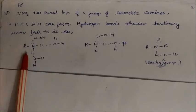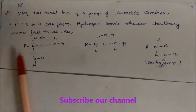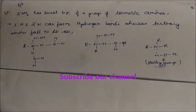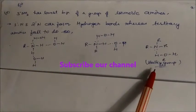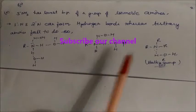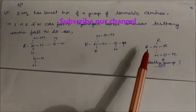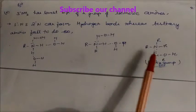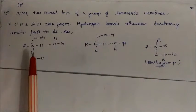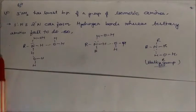Primary amines have two N–H hydrogens, giving two possibilities for hydrogen bonding. Secondary amines have one hydrogen atom, giving one possibility. Tertiary amines have a lone pair on nitrogen but the three bulky alkyl groups prevent water molecules from approaching, so there is less possibility of hydrogen bonding. Therefore, primary amines have the highest boiling point, secondary amines lower, and tertiary amines the lowest.